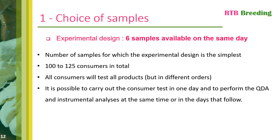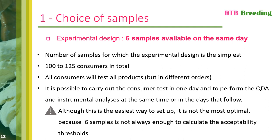I'm going to start with the easiest situation, which is when you want to analyze six different samples all available on the same day. When studying six different samples, you will need to interview 100 to 125 consumers in total. Each consumer will test all six products in a different order, and in the end you will have 100 to 125 consumers per sample. In parallel with the consumer test, you will need to carry out QDA and instrumental analysis on the same day or in the days that follow. Note that the six-sample experimental design is the simplest, but not the most optimal, because having only six samples is often not enough to calculate thresholds of acceptability.